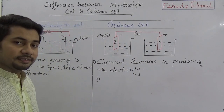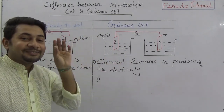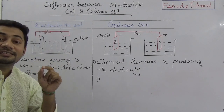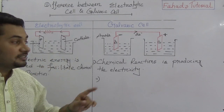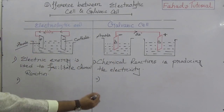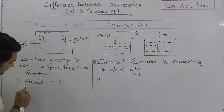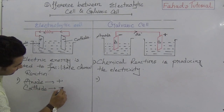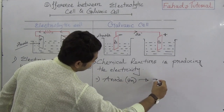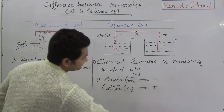In the electrolytic cell, the anode is positive and the cathode is negative. But in the galvanic cell, the anode is negative and the cathode is positive. I have explained the reason for this in a previous video. So in the galvanic cell, the anode — which is zinc — is negative, and the cathode — which is copper metal — is positive.